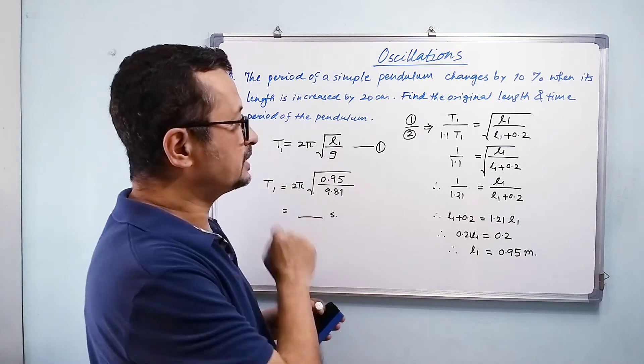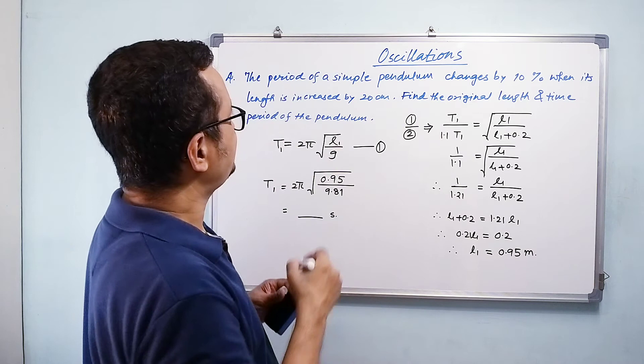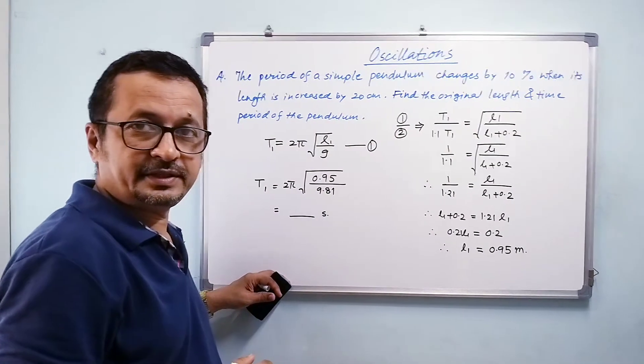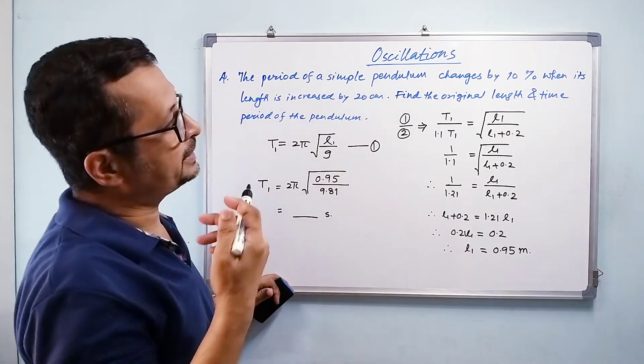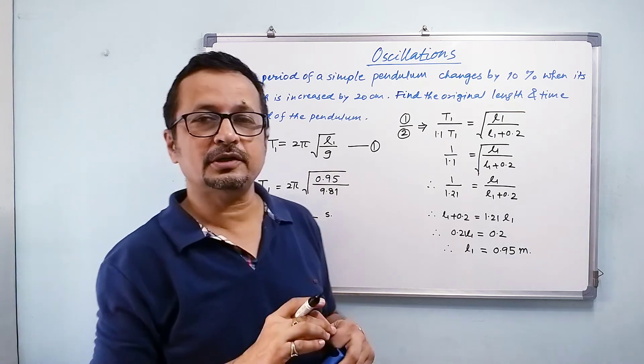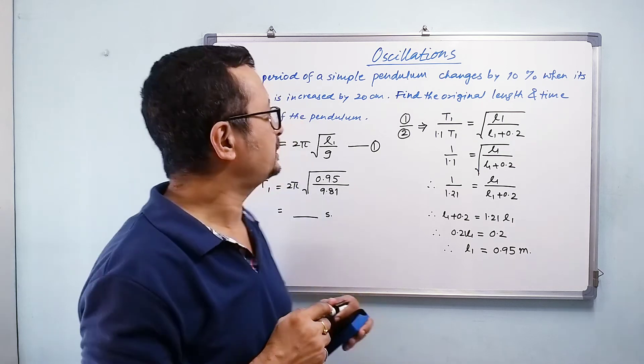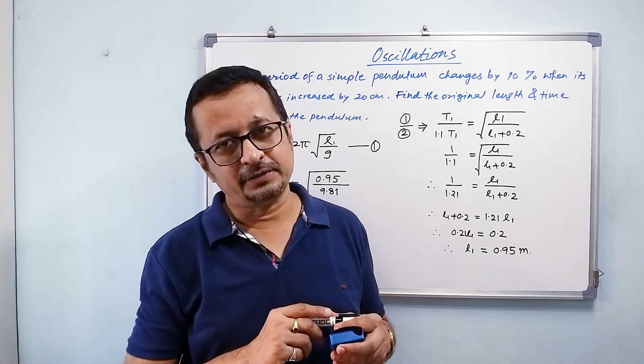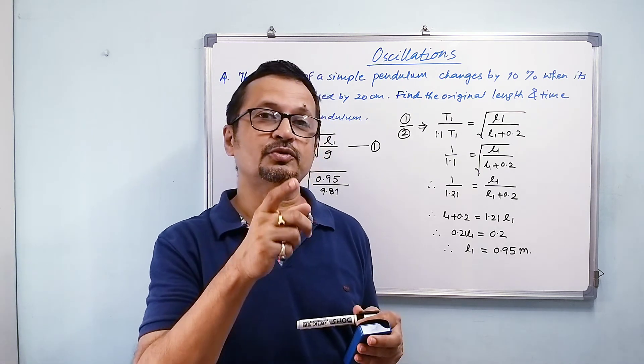And then make appropriate substitutions. If it is changing by 10%, it is increasing. I can also say that the period of simple pendulum changes by 10% when the length is increased by 20 percent.